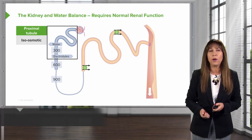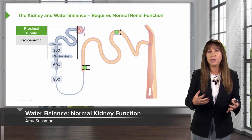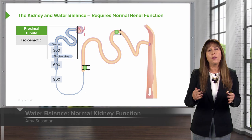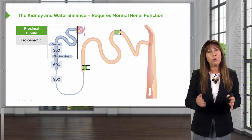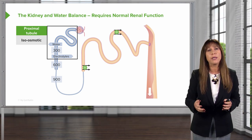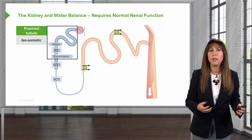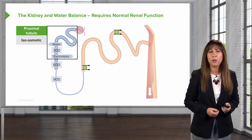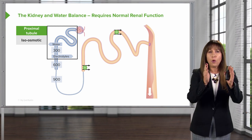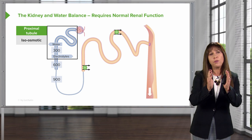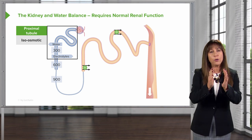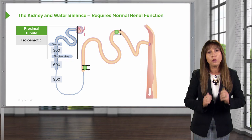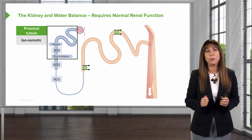Let's take a tour through our nephrons so that we can understand exactly how water is handled. Starting at our proximal tubule, the proximal tubule reclaims most of the water and electrolytes that are filtered through the glomerular basement membrane. Right there at the proximal tubule, our tubular fluid is going to be isosmotic to our plasma osmolality.